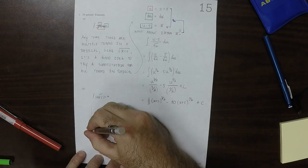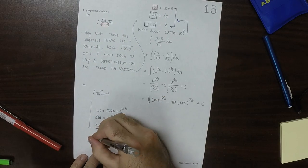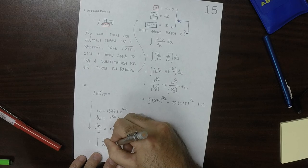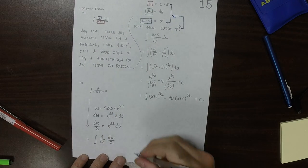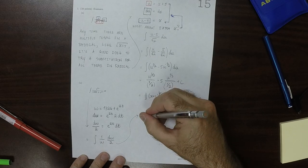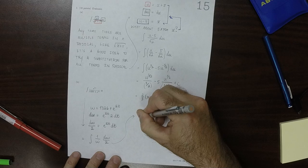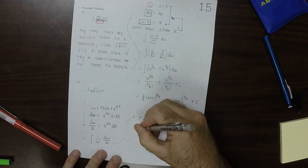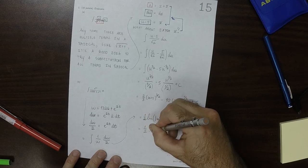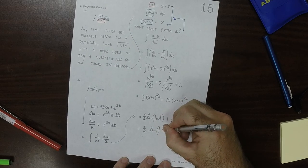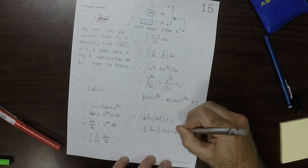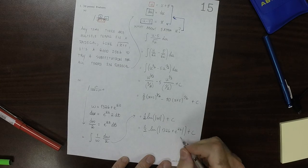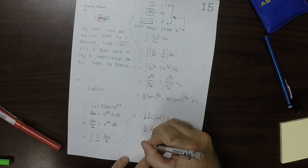So then after that substitution, this would be anti-derivative of 1 over w, dw over 2. Well, that division by 2 can be factored out, so that's just equal to half natural log absolute value of w plus a constant. So that's half natural log absolute value, 1326 plus exponential 2t plus a constant. And then because the thing inside of the absolute value is always positive, you can drop the absolute value.